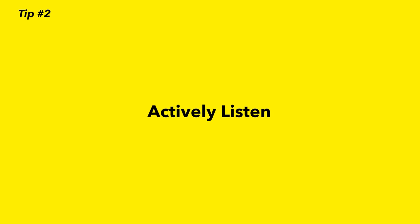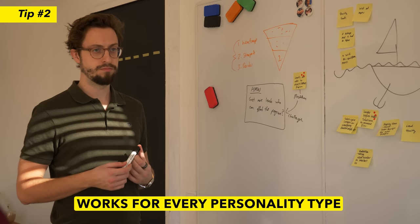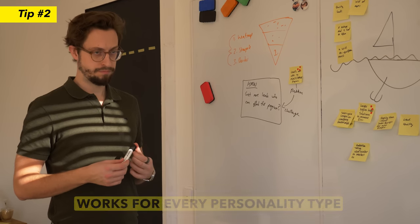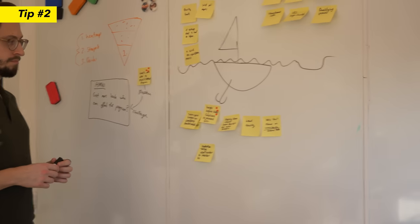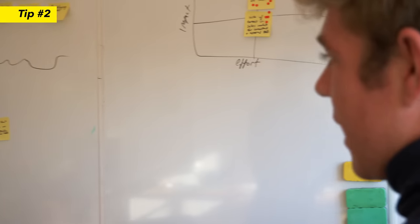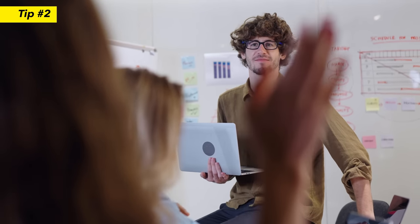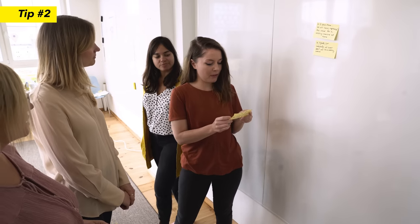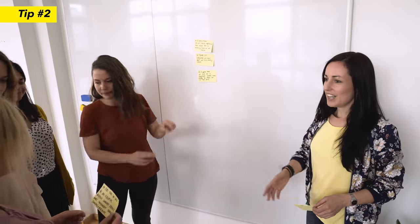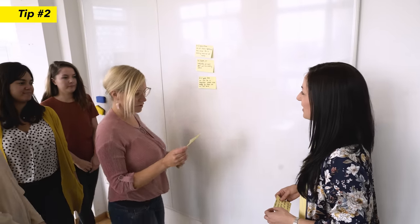Tip number two: actively listen to participants. Listening isn't something that just happens — it's an active process where you make the decision to really understand what somebody is saying. Listen to genuinely understand their concerns and problems rather than thinking about your next response. One of the main reasons for disruptive behavior in workshops is that participants don't feel their concerns are listened to or heard. Make sure each participant feels truly heard and that their concerns are valid. Check out our video for more tangible tips on active listening.